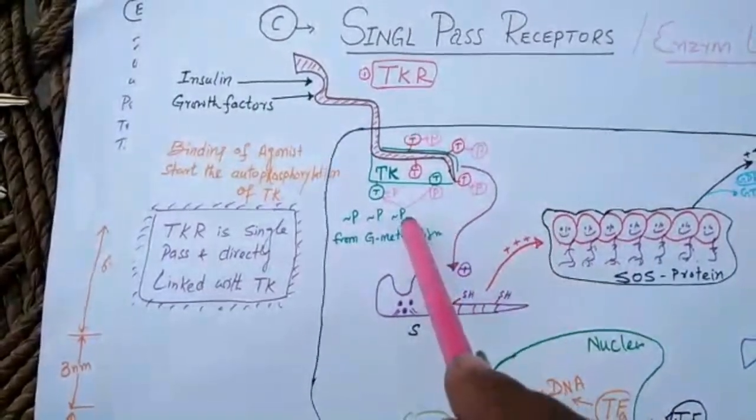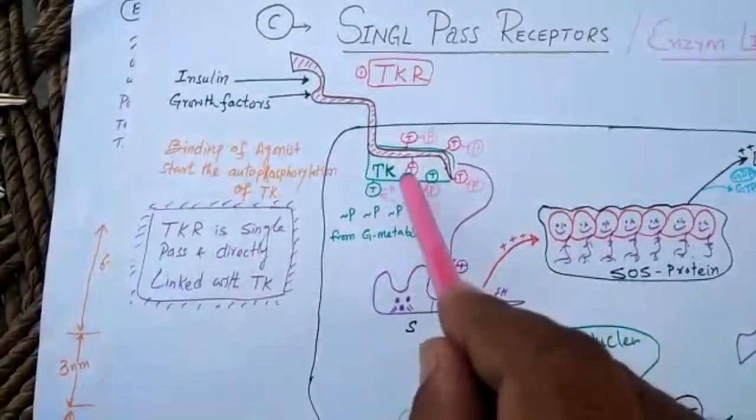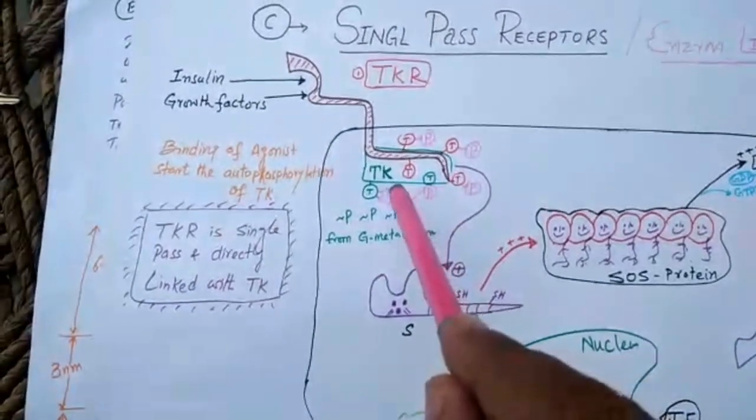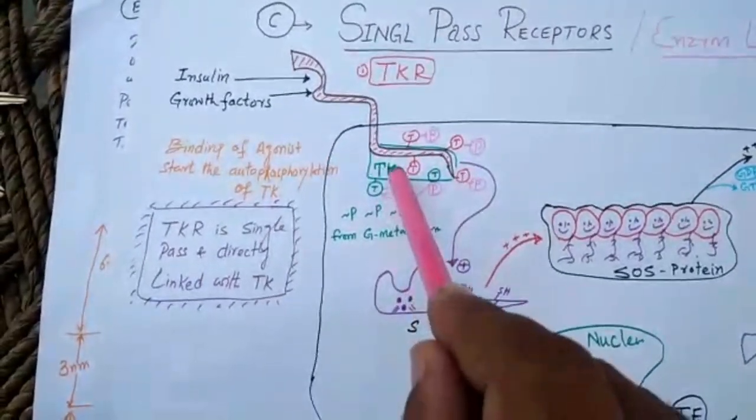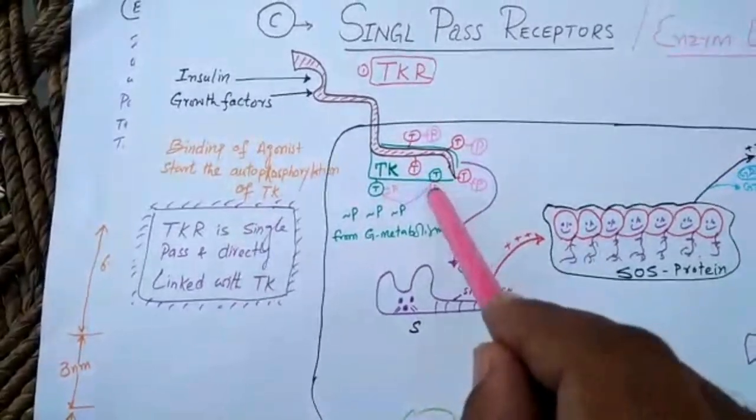These energy-rich molecules will bind with tyrosine. Now, this is known as tyrosine phosphorylated. Once the tyrosine of tyrosine kinase is phosphorylated, now it becomes active. This active kinase then stimulates the self-hydro protein.